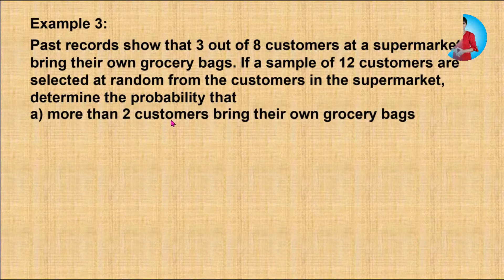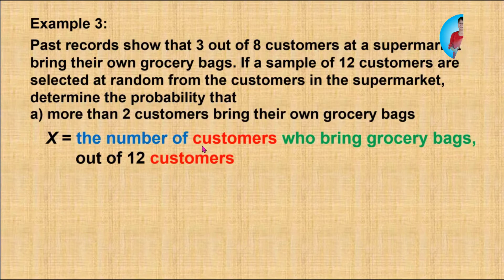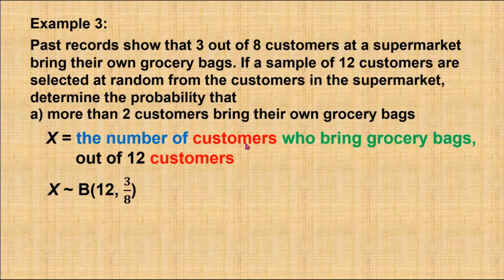The variable can be defined as the number of customers, where the observation is customers. The success criteria is the customers who bring their own grocery bags, and the number of customers comes from the 12 customers in the sample. So the random variable X follows binomial distribution with n = 12 and the probability of customers who bring their own grocery bags is 3/8.